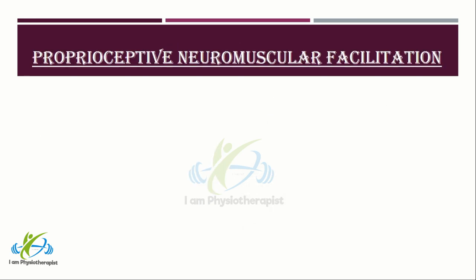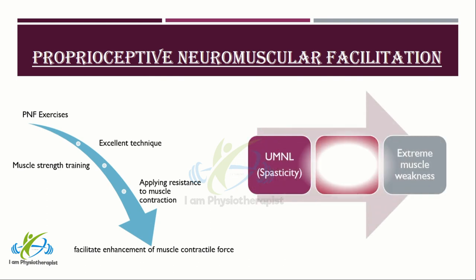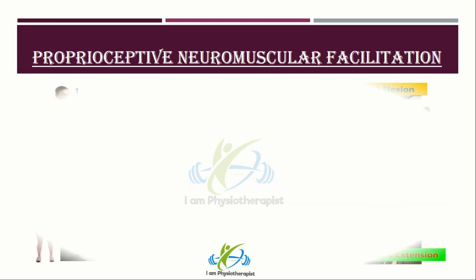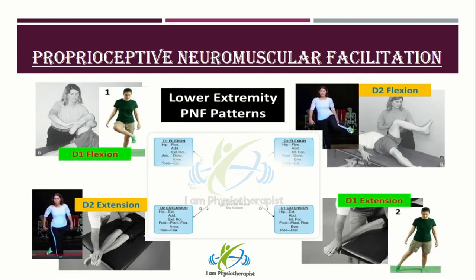Proprioceptive neuromuscular facilitation, or PNF exercises, is an excellent technique for muscle strength training. PNF is based on applying resistance to muscle contraction in order to facilitate enhancement of muscle contractile force. PNF is suitable for patients with upper motor neuron lesions accompanied by spasticity, but may also be used to initiate muscle contraction in cases of partial peripheral nerve damage and extreme muscle weakness. Here are the D1 and D2 flexion and extension patterns for upper and lower extremity.